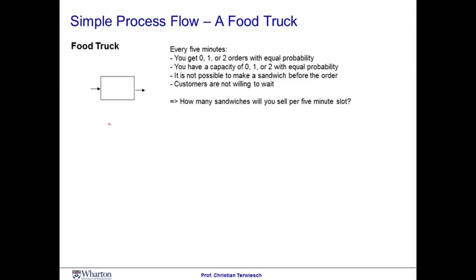Imagine you're working in a food truck. At any time slot of five minutes duration, you can get between zero, one, or two orders with equal probability. You also have a capacity of zero, one, or two orders. It's not possible to make a sandwich before the order occurs, and customers are not willing to wait for the sandwich. How many sandwiches would you sell every five minutes? We defined the flow rate as the minimum between demand and capacity.